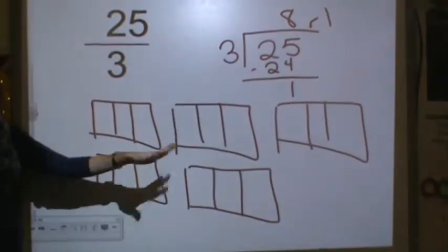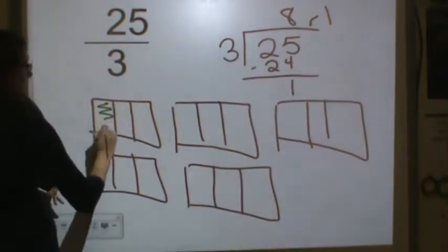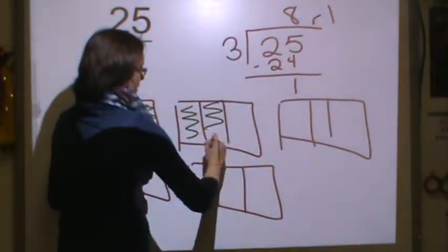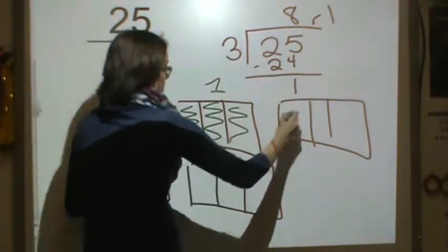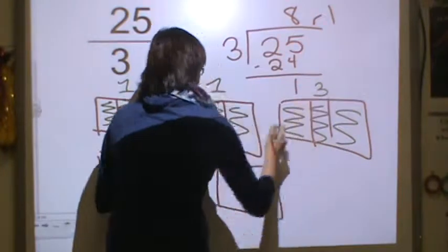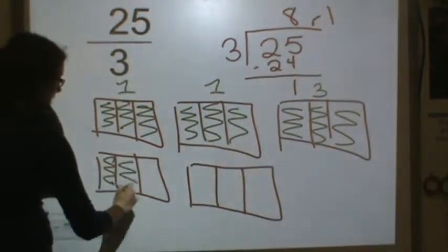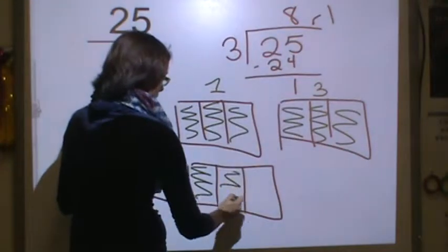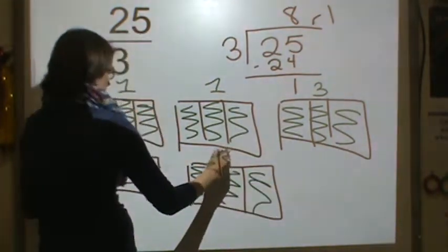Now I have a bunch of things divided into thirds. So I have 1, 2, 3. This is a whole. 4, 5, 6. This is a whole. 7, 8, 9. This is a whole. 10, 11, 12. This is a whole. 13, 14, 15. This is a whole.